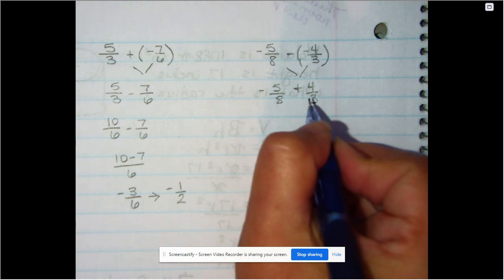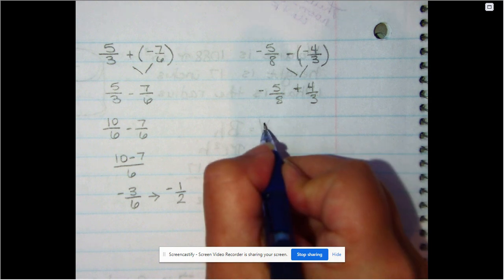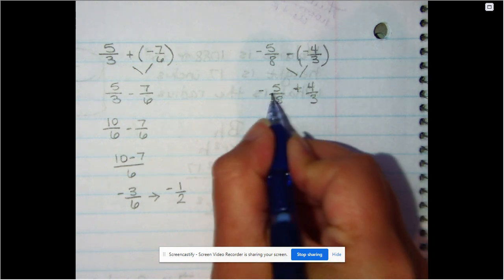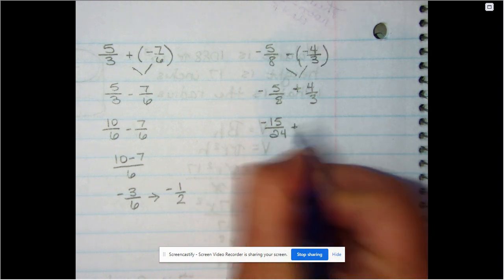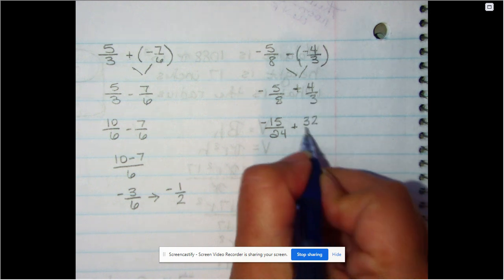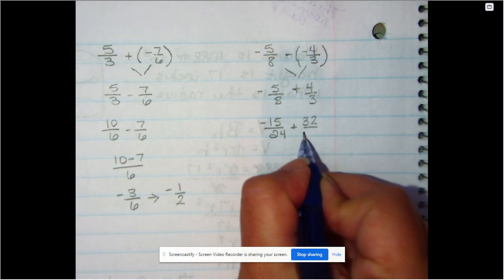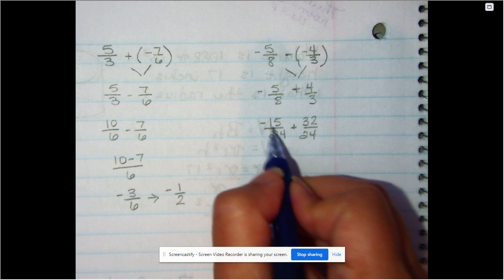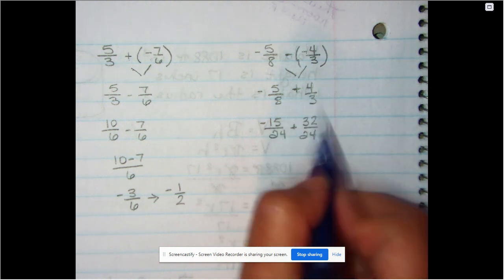Now we're going to need a common denominator again. The most obvious one would be twenty-fourths, so we have negative fifteen twenty-fourths plus thirty-two twenty-fourths because three times five is fifteen, eight times four is thirty-two.